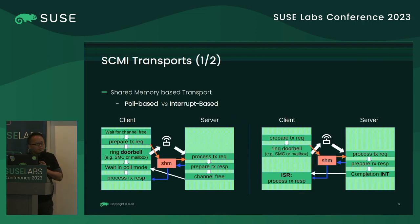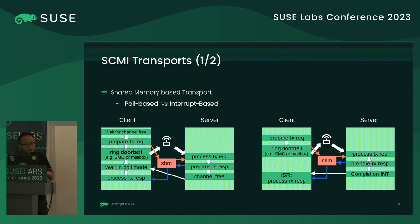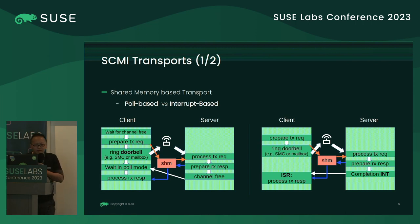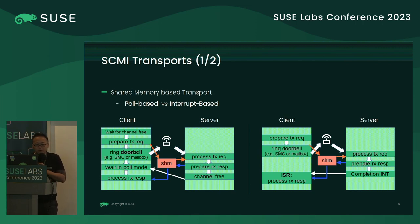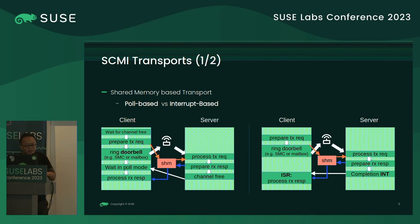Now I'd like to introduce how many transports the SCMI protocol can support. First is shared memory-based transport, which we usually call SMT. In this transport there are two modes a developer can choose: poll-based, where the SCMI client has to wait for the response from the server unless a timeout happens.